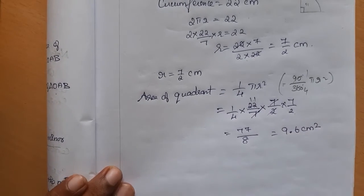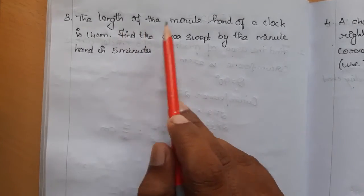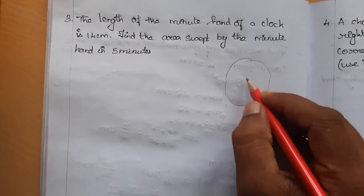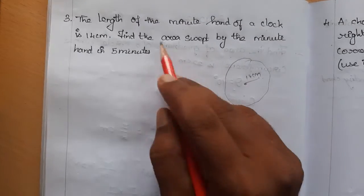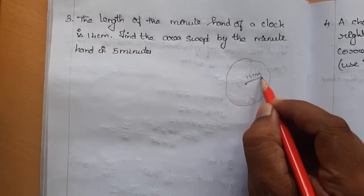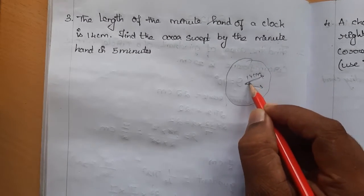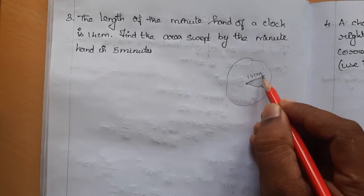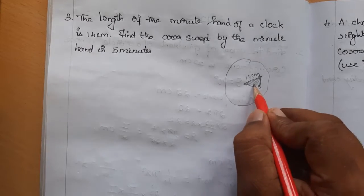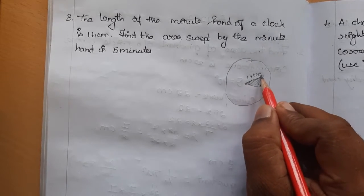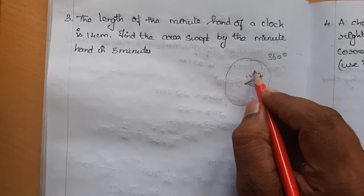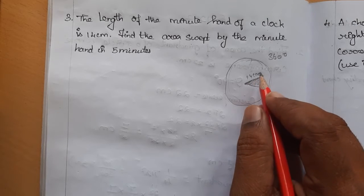Problem 2: The length of the minute hand of a clock is 14 cm. Find the area swept by the minute hand in 5 minutes. After 5 minutes, the hand sweeps a sector shape. To find this sector area, we need the angle and the radius. The full revolution is 360 degrees in 60 minutes.